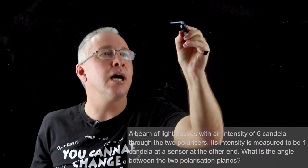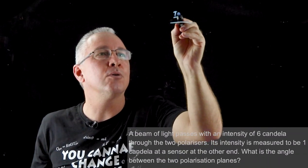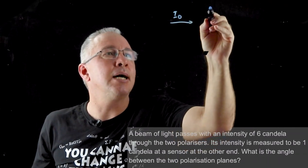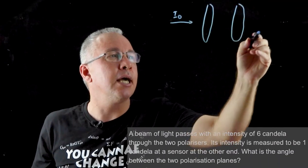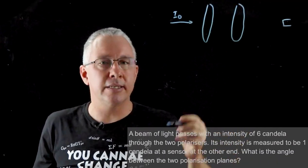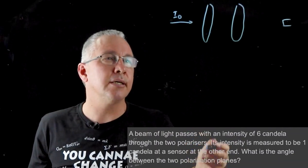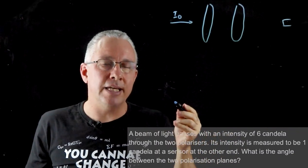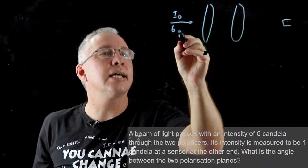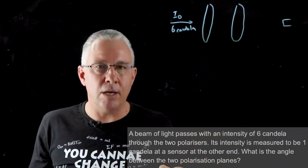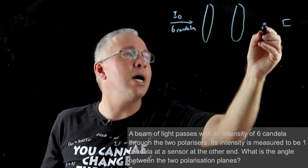So I have a light beam with a certain intensity that I'm going to call I0. It's going to pass through two filters, and we have one filter here and one filter here, and we know we have a sensor at the other end that is going to pick up the intensity. Now the intensity of the entry value is given as six candela. Now we know the end here is one candela.